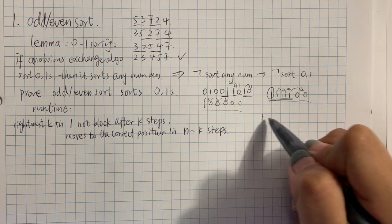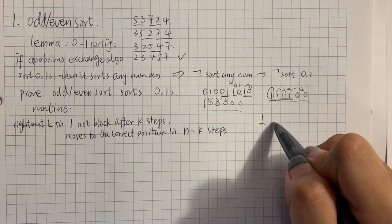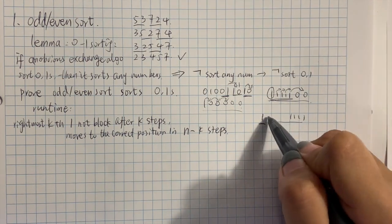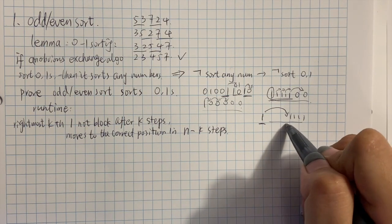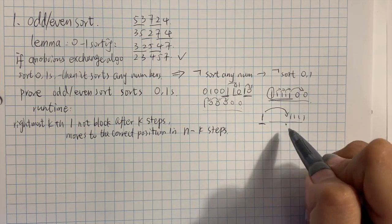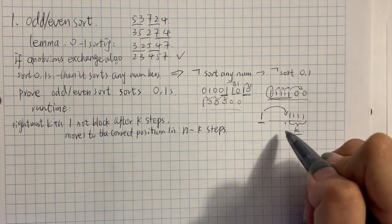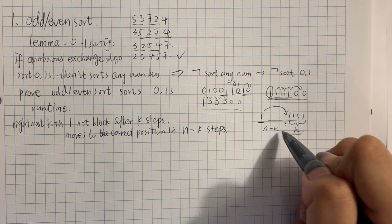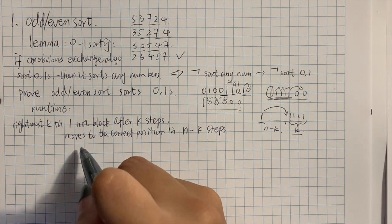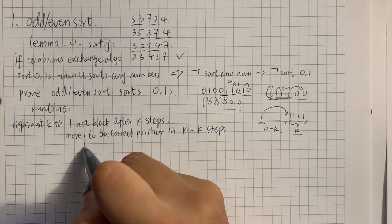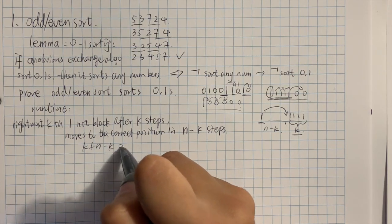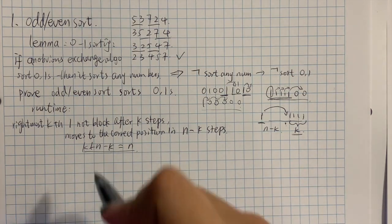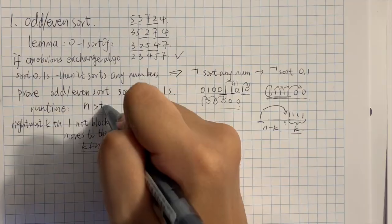So after all the ones on its right get moved to the right, it gets moved to its right position. For example, you have the k-th one here, and then you have a bunch of ones here, so you just need to move to this position. Since you already have k here, you just need to move n minus k steps. So k plus n minus k is just n. So the runtime is just n steps.